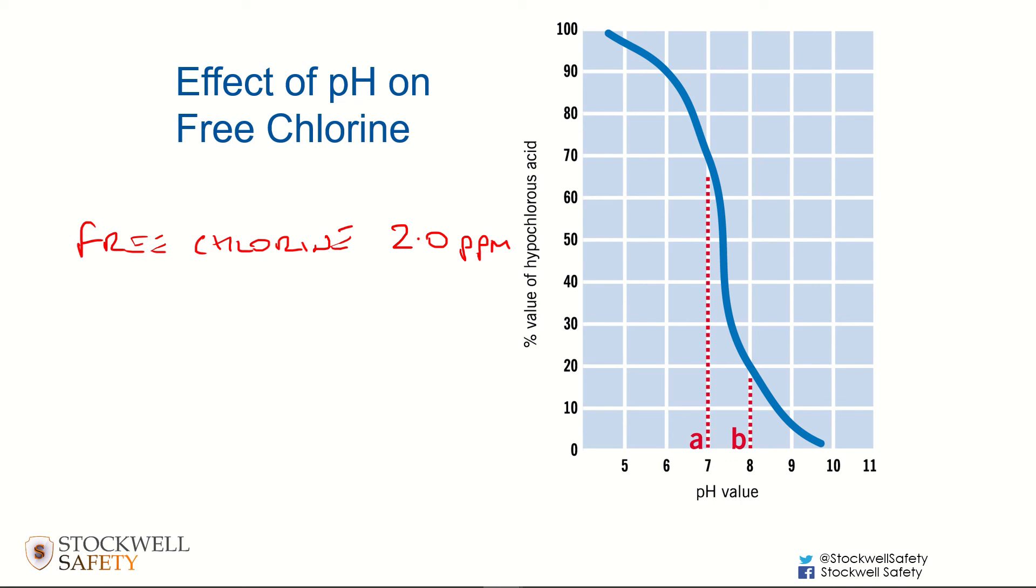You might be happy with that, but what if the pH had gone too high and you end up with a pH value of 8? Take a look at the blue line where it intersects. If you got a pH value of 8, look at where that intersects with the blue line here. You've really only got about 18% there.